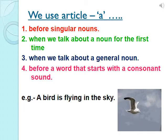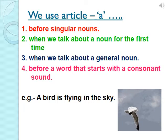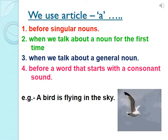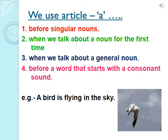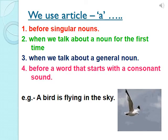We use article A before singular nouns when we talk about a noun for the first time, when we talk about a general noun, and when the word starts with a consonant sound. For example: 'A bird is flying in the sky.' Here the noun bird is singular, we are talking about that bird for the first time, it's any bird in general, and the word bird starts with a consonant sound B. Therefore, we put article A before it.